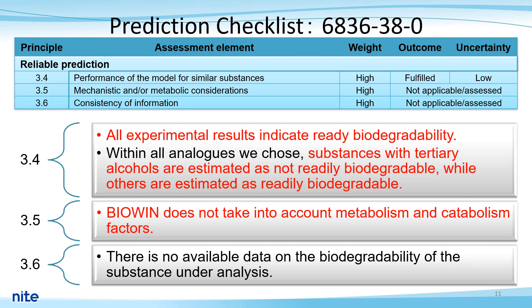For 3.5, this item evaluates how the model predictions consider the effects of metabolism and its products. BioWin was not included because it does not account for metabolic and catabolic factors. For 3.6, this item evaluates the consistency of information when multiple model predictions are used to predict the property of interest and when additional information on the same or related properties, such as experimental results, is used. In this case, there are no data on the biodegradability of the substance under analysis. We concluded 3.5 and 3.6 outcomes as not applicable.